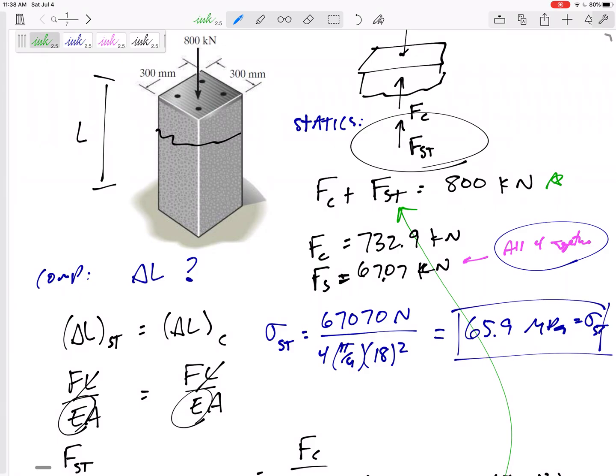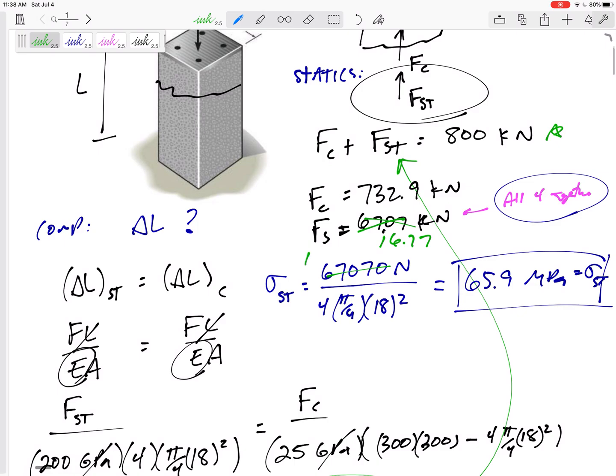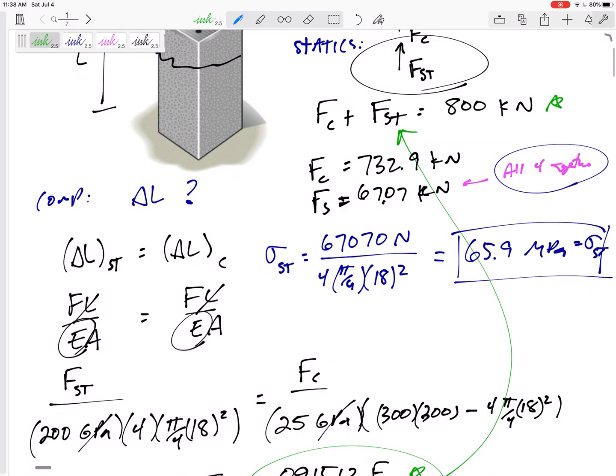Newtons over millimeters squared are MPa. And so this would be 65.9 MPa stress in the steel. Box it in, because that is what it asked for. Now, just a little side note. If you had done all four separate, you would have gotten 16.77, and so you would have said 16.77, but you would have only had one area right here. We would have ended up with the same 65.9 MPa, whether you group them all together or treated them separately.